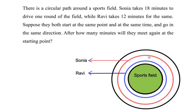So here you can see that I have drawn the circular path and there is a sports field. As it is given, the circular path is around the sports field. Since Sonia takes 18 minutes, it is represented by the bigger circle.